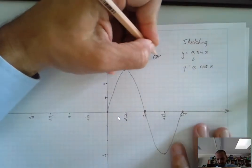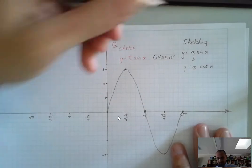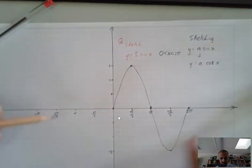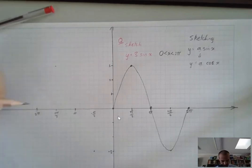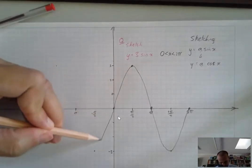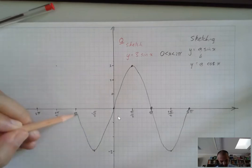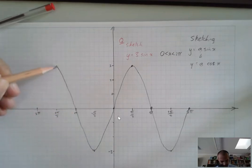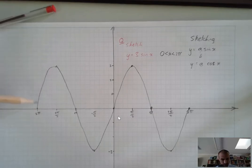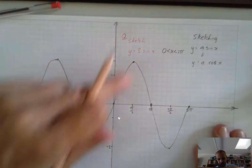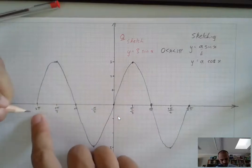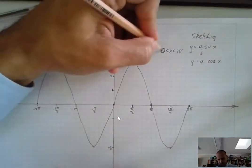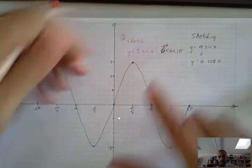If you want to sketch it further, say into the negatives, it's pretty straightforward. Again, try to keep things quite smooth. Try to move a little faster here, but you really want to make sure things stay nice and tidy. It should have a nice sort of bend in it. That's now between negative 2π and 2π.